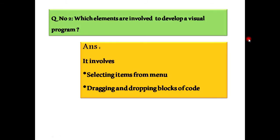Question number two: Which elements are involved to develop a visual program? Answer: It involves number one, selecting items from menu, and number two, dragging and dropping blocks of codes.